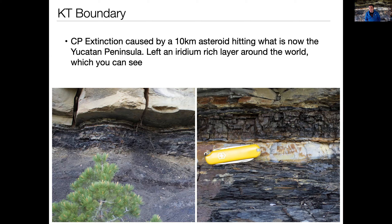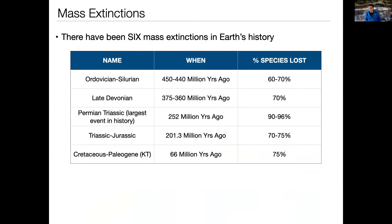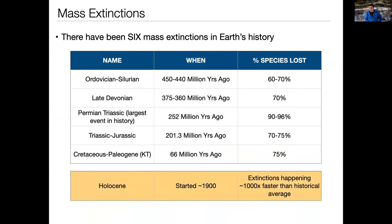If you've been paying attention, you'll notice I only listed five mass extinctions, but I said there have been six in Earth's history. The reason for that is we are currently in the middle of a mass extinction event. It's called the Holocene extinction. It started about 1900, just over a hundred years ago, and it seems clear that it is associated with human activity here on Earth.